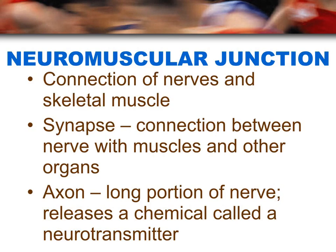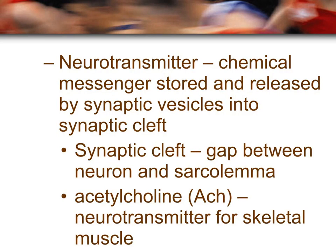The axon transmits information from the cell body down to the axonal terminal, where it can be sent to wherever it needs to go. A neurotransmitter is a chemical messenger stored in the synaptic vesicle in the synaptic bulb, which is at the end of the axon. When triggered, this neurotransmitter is released into the synaptic cleft — the gap between the neuron and the sarcolemma, which is the cell membrane of the muscle cell.